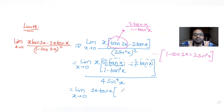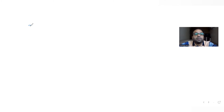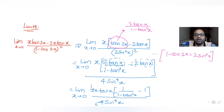Inside the bracket I have 1/(1 minus tan²(x)) minus 1, and the denominator is 4·sin⁴(x). I can cancel the 2s, so the expression further becomes limit x tends to 0 of x·tan(x) times the bracket, divided by 2·sin⁴(x).